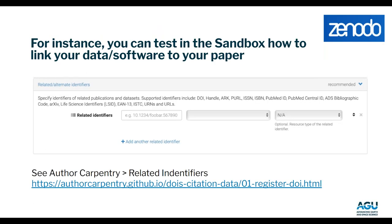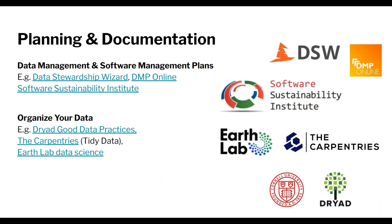The sandbox also helps illustrate another important step: linking your data and software to your paper once it's been published. This is not always automatic — some repositories like Dryad do this, but others require additional steps. Authors sometimes wonder why their paper and data aren't connected. The 'related identifier' section in author carpentry is a good example of what to consider when linking your research objects.